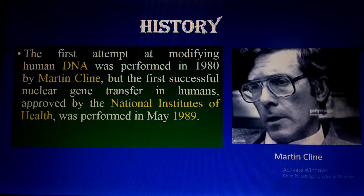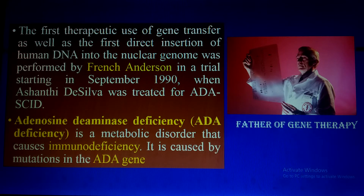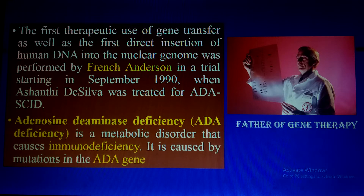The history: the first attempt at modifying human DNA was performed in 1980 by Martin Cline. The first successful nuclear gene transfer in humans, approved by the National Institutes of Health, was performed in May 1989. The first therapeutic use of gene transfer and the first directed insertion of human DNA into the nuclear genome was performed by French Anderson, who is considered the father of gene therapy. You can see his photograph here on my right side.